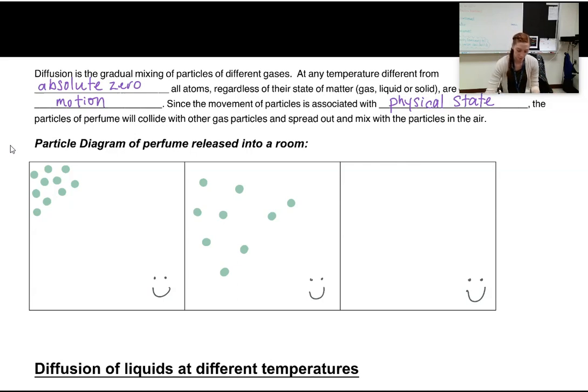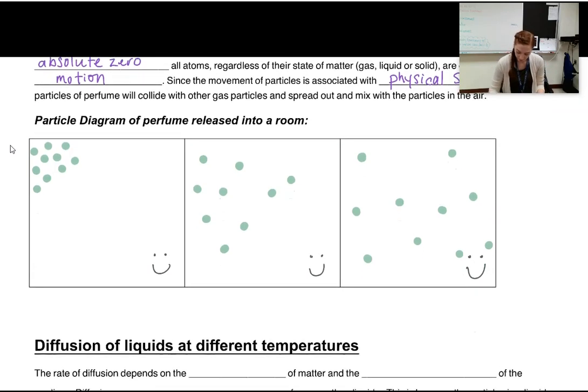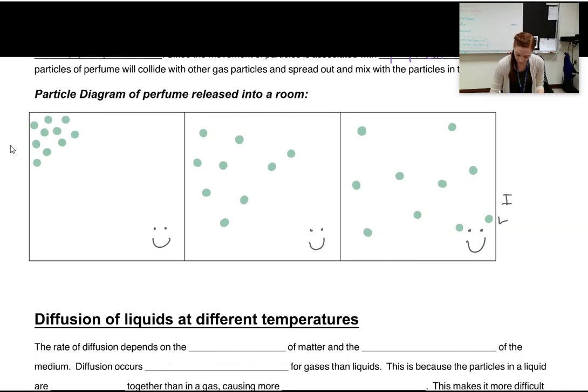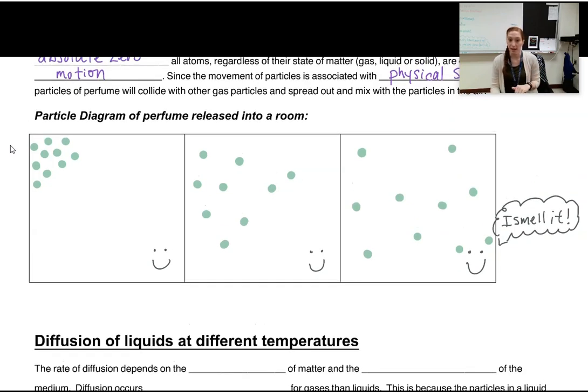And then ultimately they're going to spread out even more until two things happen. One, which is what we're talking about here, our person can smell the perfume that was released. And that's because the second thing is happening, which is the particles of our gaseous perfume have expanded to fill the space of the container. Again, this is what's going to happen in diffusion of gases.